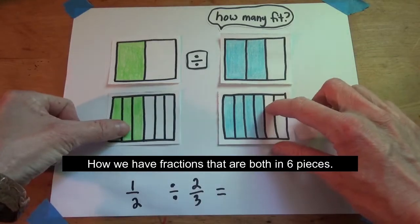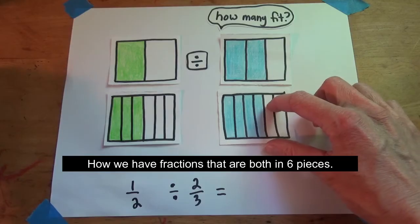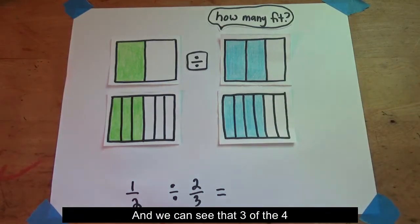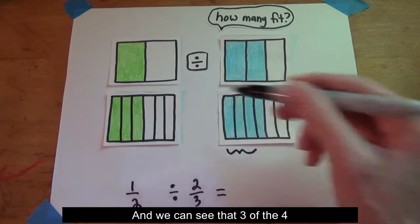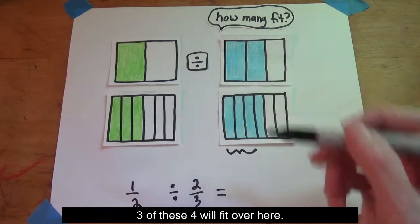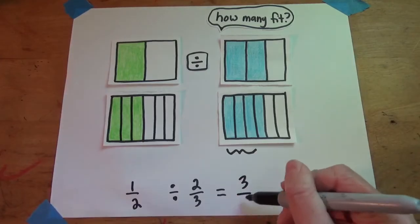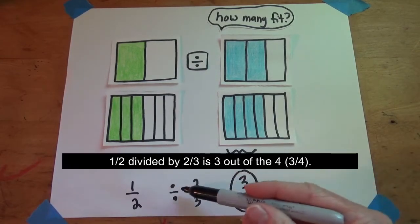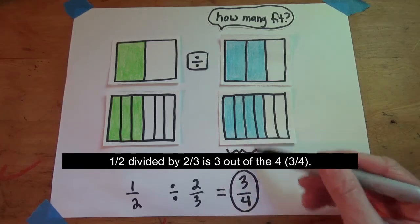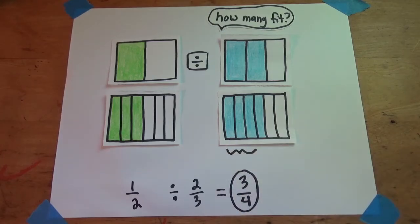Now we have fractions that are both in six pieces, and we can see that three of the four, three of these four will fit over here. So one-half divided by two-thirds is three out of the four. Three-fourths.